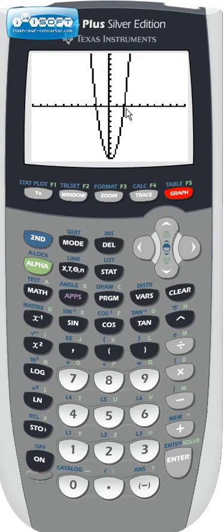One looks to be a positive 2, and the other one looks to be somewhere around a negative, somewhere between a negative 1 and a negative 2, but closer to negative 2.